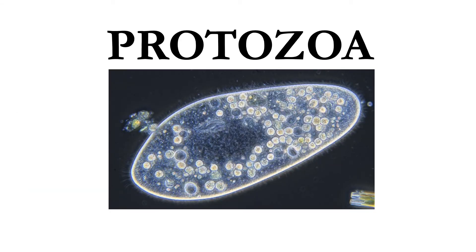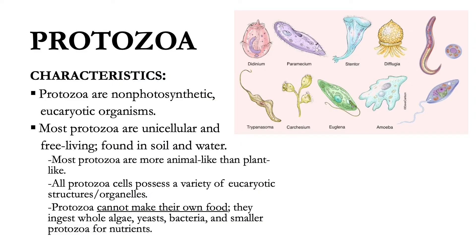Now we'll move on to protozoa. Together with algae, protozoa are classified in the Second Kingdom Protista. They are non-photosynthetic eukaryotic organisms. Most protozoa are unicellular and free-living, found in soil and water.